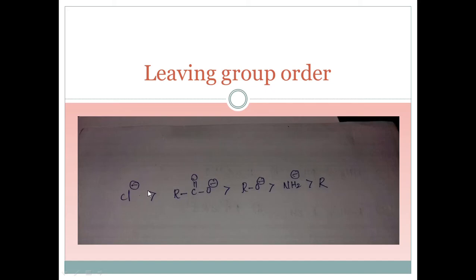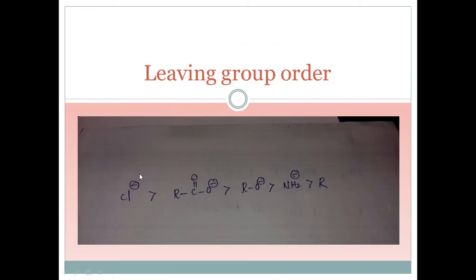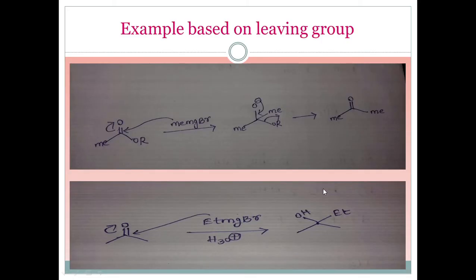Keep this as a key point: a good nucleophile will be a bad leaving group, and a bad nucleophile will be a good leaving group. This is a general rule. The leaving group order is: halides like Cl⁻ (stable anion) are better leaving groups. Equivalent resonance structures improve stability. RO⁻ and then amines follow, and R⁻ is never a leaving group.